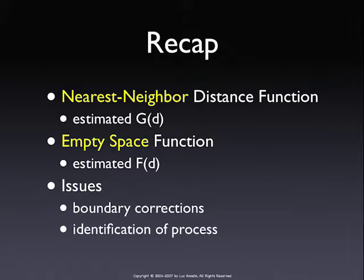Some issues with this: as you get closer to the boundary of your point pattern, you don't necessarily know that your nearest neighbor is actually inside the bounding box — it could be outside. To correct for that, there are a number of adjustments to the cumulative distribution function estimate. One is a buffer adjustment where you essentially shrink the bounding box and take neighbors inside a buffer zone on the outside, resulting in a loss of information.